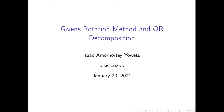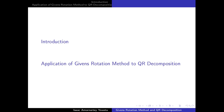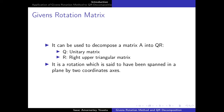Let's now dive into the Givens rotation matrix method and QR decomposition. This Givens rotation method is one of the methods also used to decompose a matrix into Q and R, where Q has to be a unitary matrix and R has to be a right upper triangular matrix. When you multiply the matrices back you have to get your original matrix.